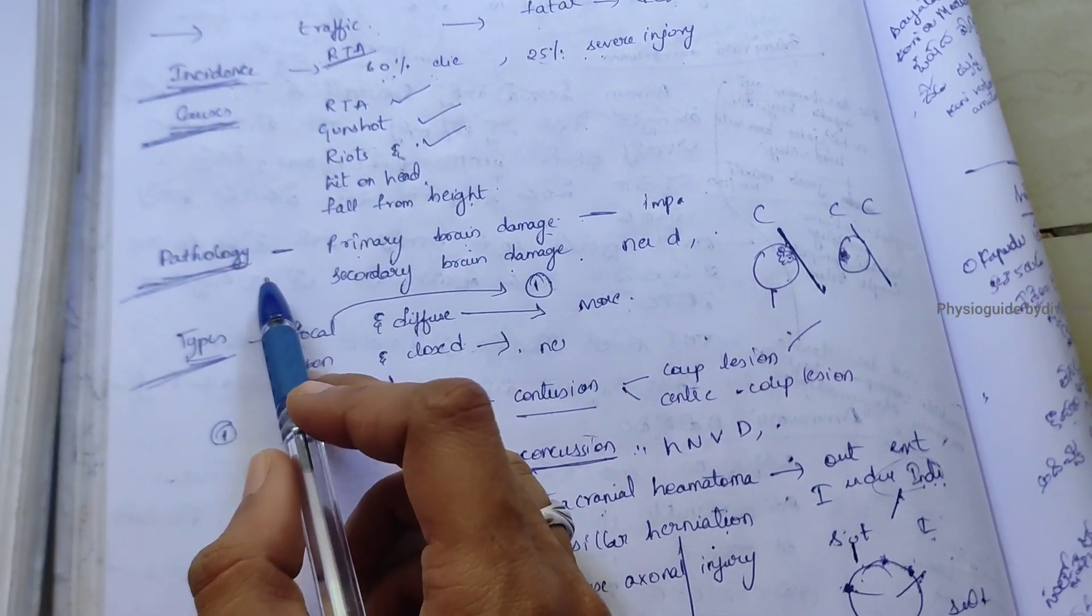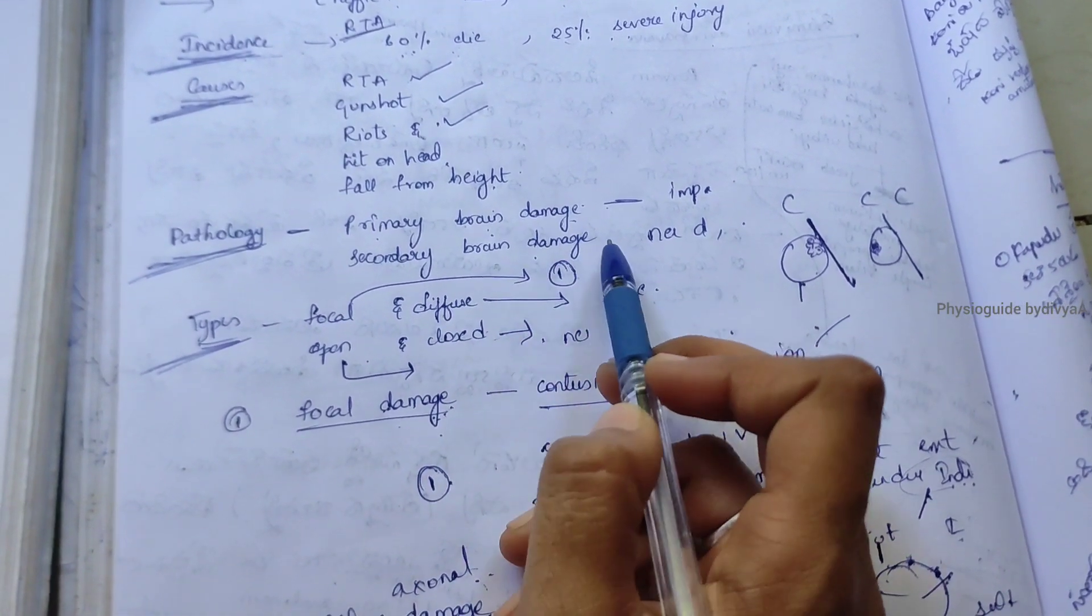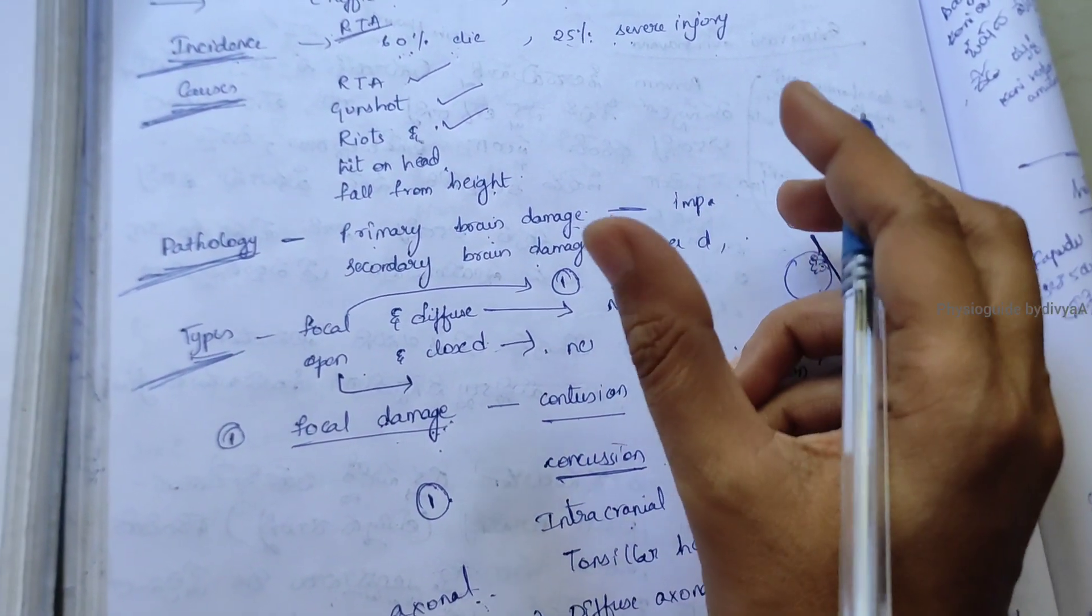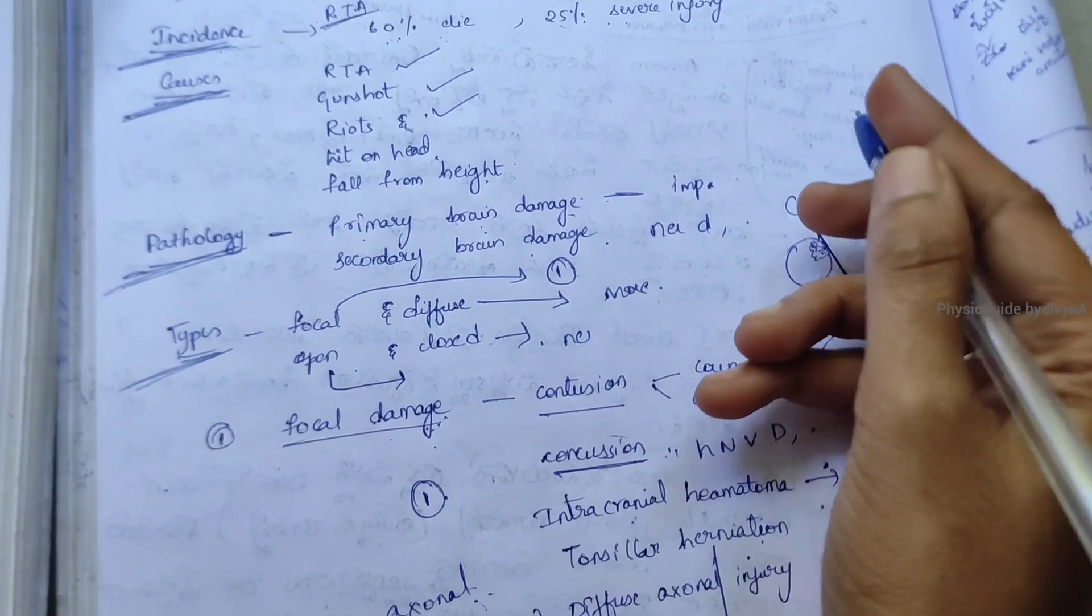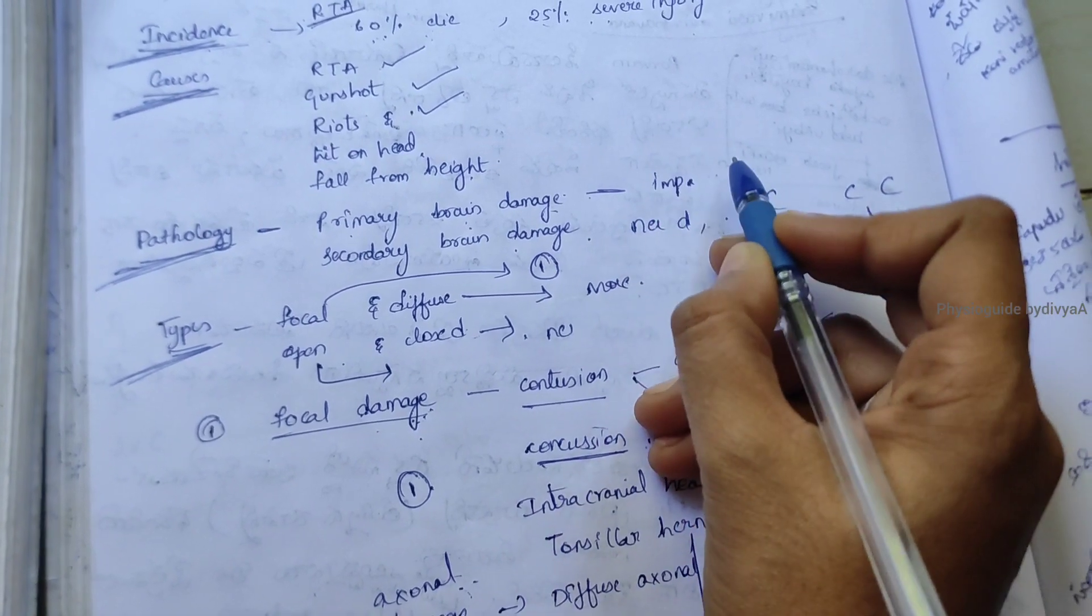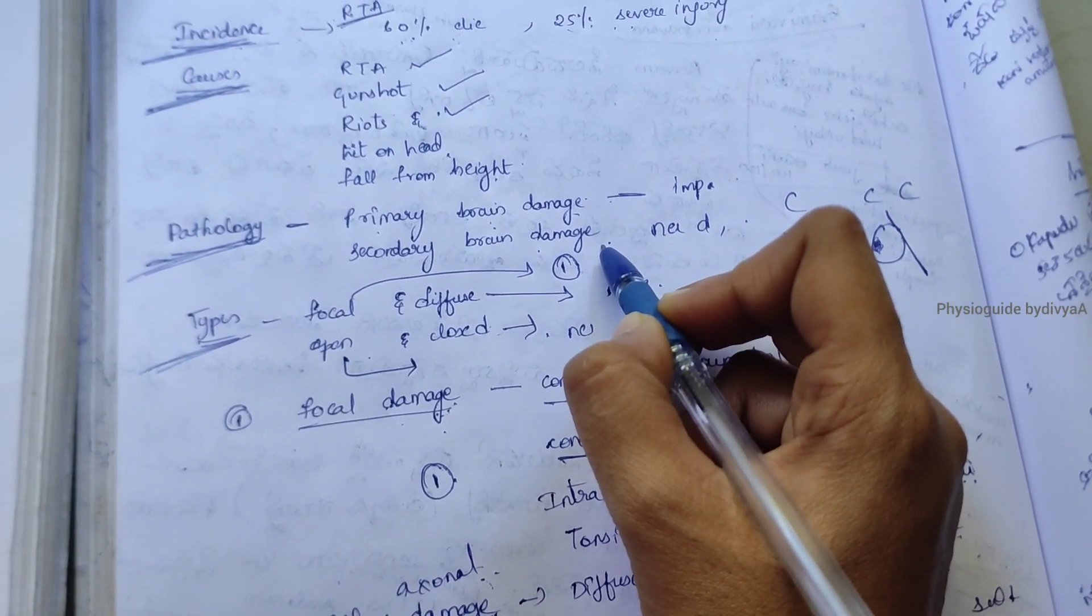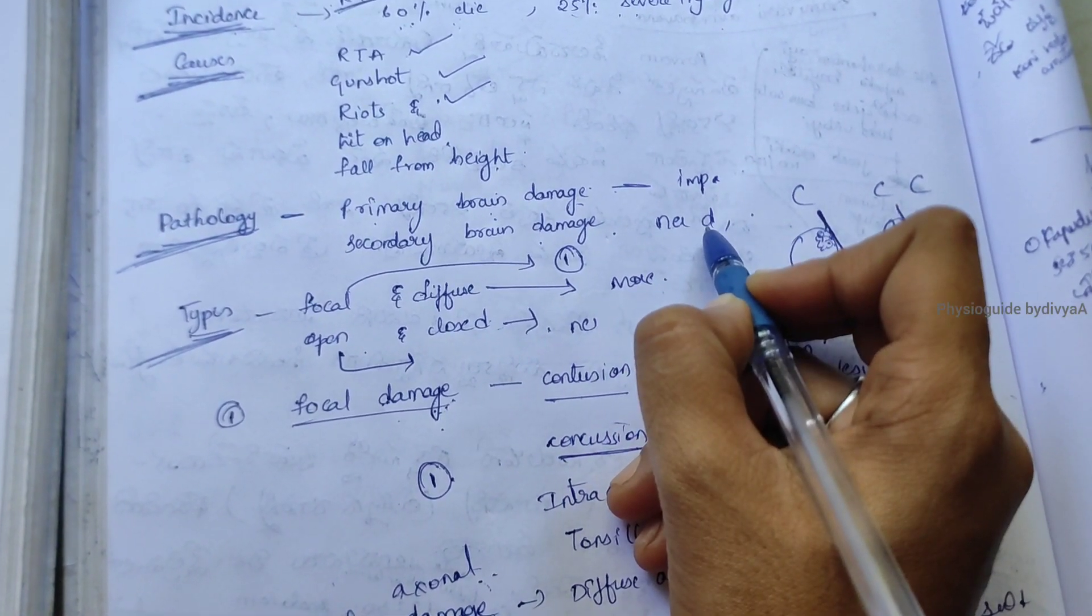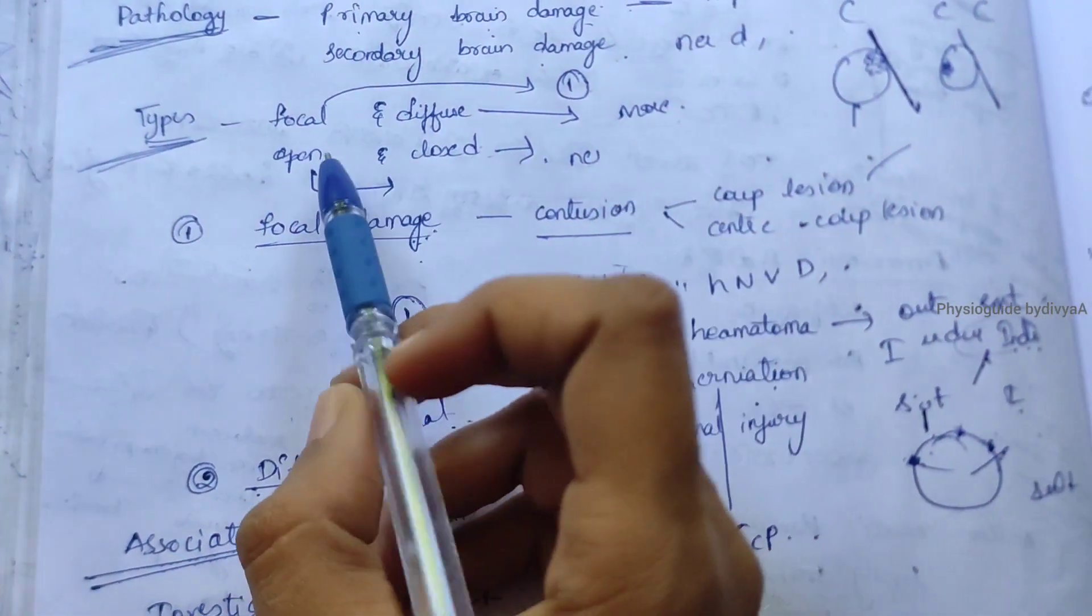Pathology is of two types: primary and secondary brain damage. Primary occurs from direct impact, meaning hitting or beating. Secondary is not by violence but due to neurological damage like hematoma, brain swelling, ischemia, or infection.